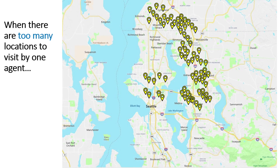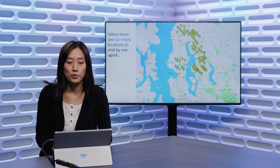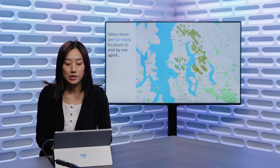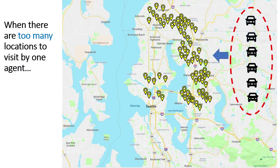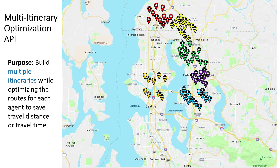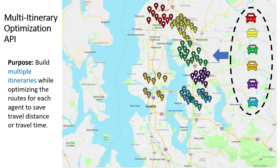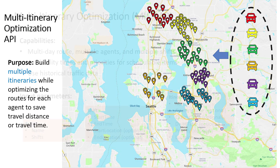In a more complex scenario, if there are too many stops for one agent to visit, we will need more drivers to service all the stops and divide the stops among all the drivers. The purpose of the Multi-Itinerary Optimization API is to build multiple itineraries while optimizing the routes among all the drivers to save the travel time and travel distance.